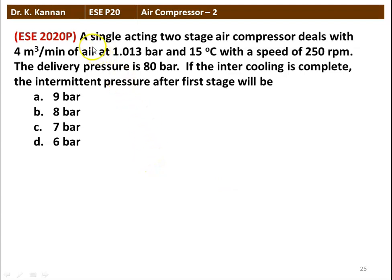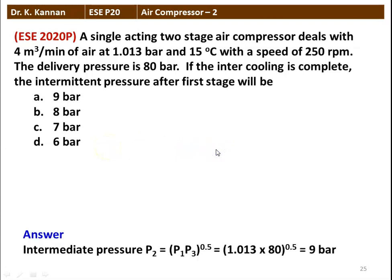The next question is from the 2020 question paper. A single acting two-stage air compressor deals with 4 m³/min of air at 1.013 bar and 50°C with a speed of 250 RPM. The delivery pressure is 80 bar. If the intercooling is complete, the intermediate pressure after the first stage will be. Using the same formula, P2 = (P1·P3)^0.5 = (1.013 × 80)^0.5 = 9 bar. The answer is 9 bar.